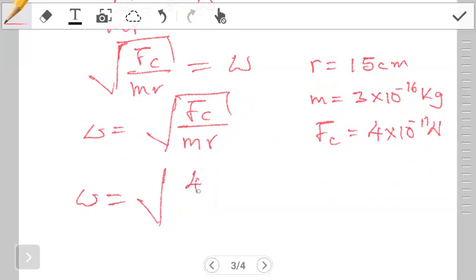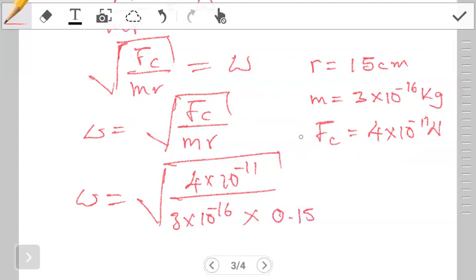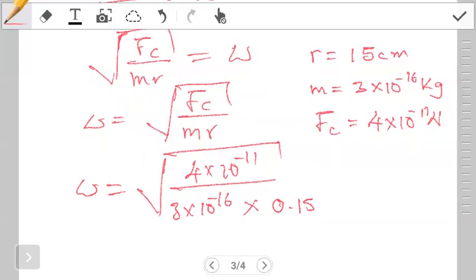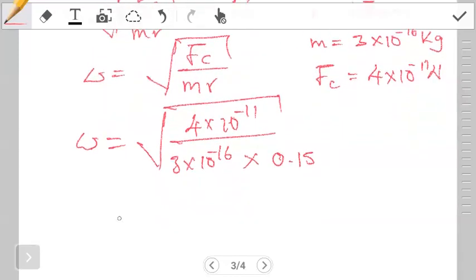4 by 10 to the power negative 11, and then this is divided by the mass, that is 3 by 10 to the power negative 16, and then this is multiplying the radius. The radius is given in centimeters, so in meters that is 0.15 meters.